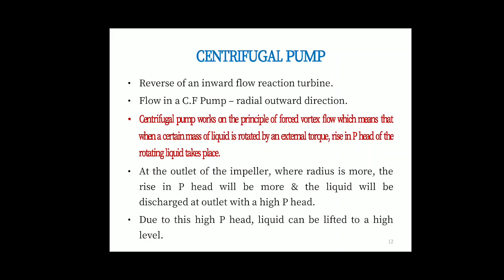Now let us see a centrifugal pump. It is the reverse of an inward flow reaction turbine. Flow in a centrifugal pump is radial outward direction. Centrifugal pump works on the principle of forced vortex flow, which means that when a certain mass of liquid is rotated by an external torque, rise in pressure head of the rotating liquid takes place. At the outlet of the impeller, when the radius is more, the rising pressure head will be more and the liquid will be discharged at outlet with very high pressure heads. Due to this high pressure head, liquid can be lifted to a high level.